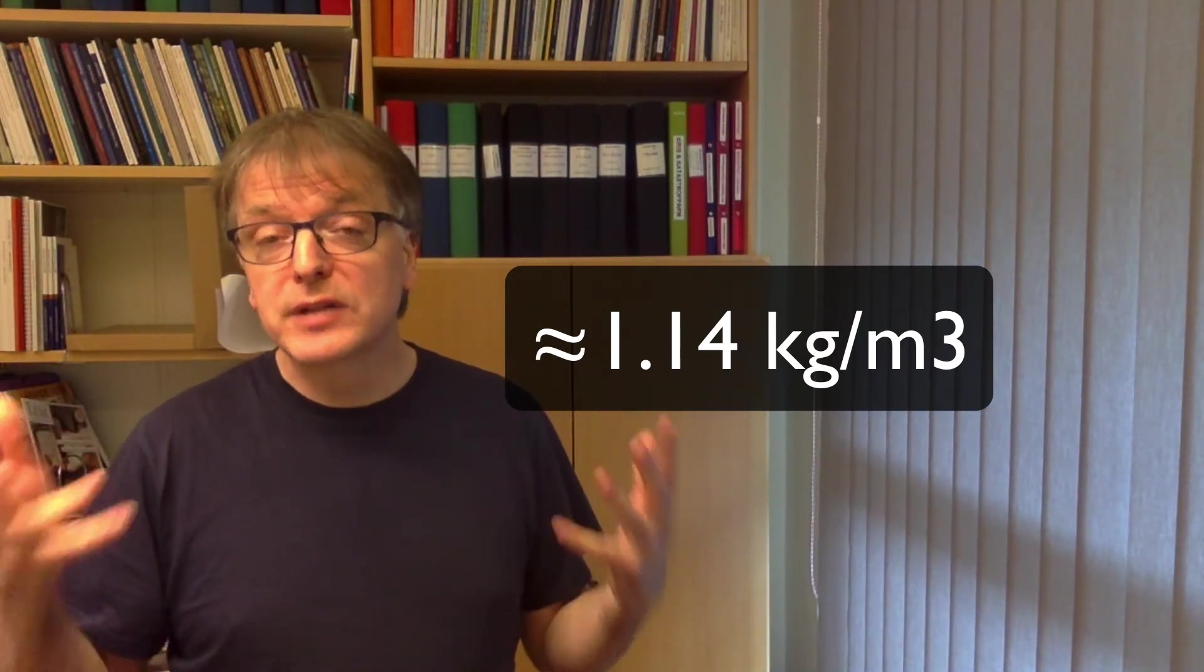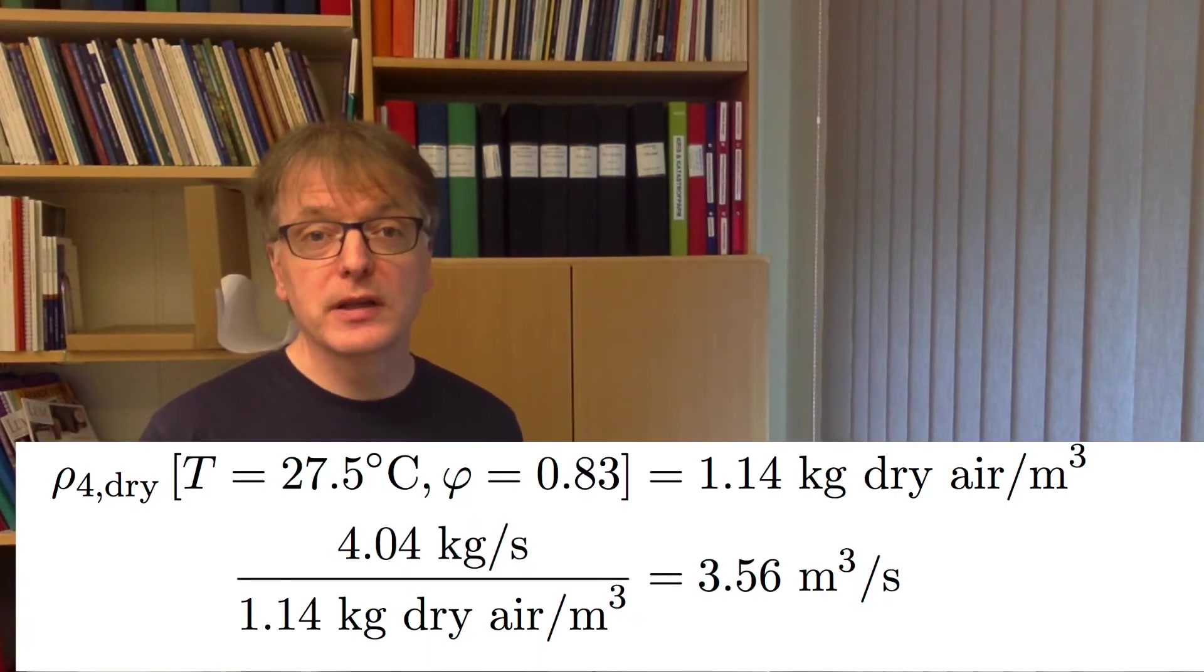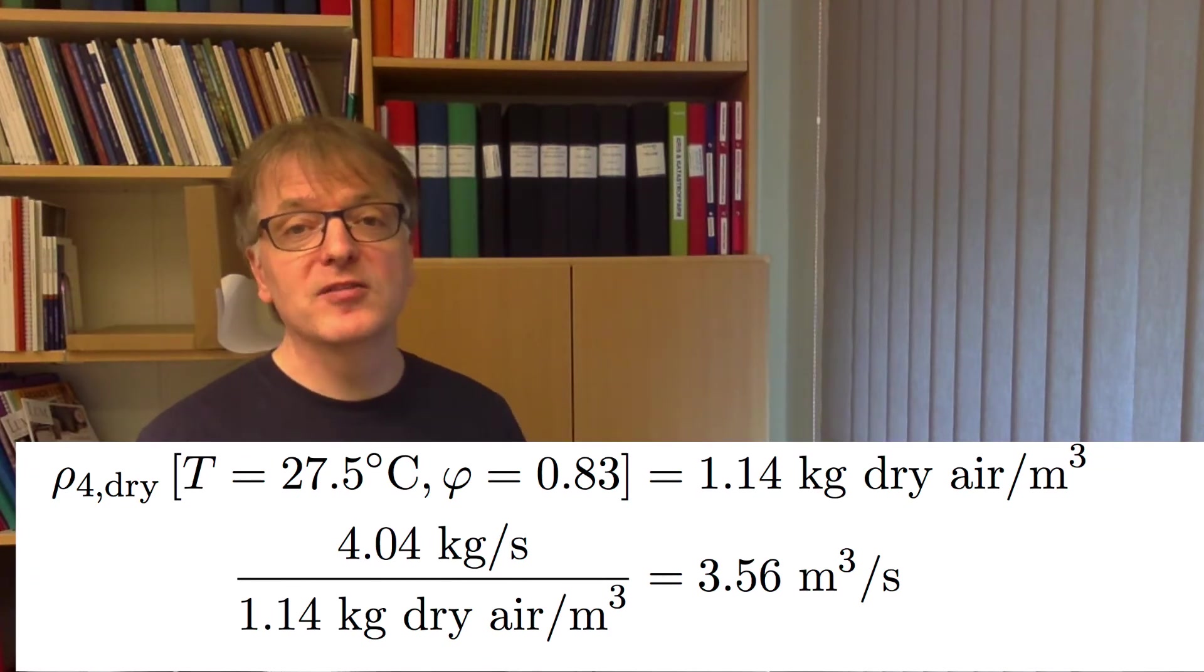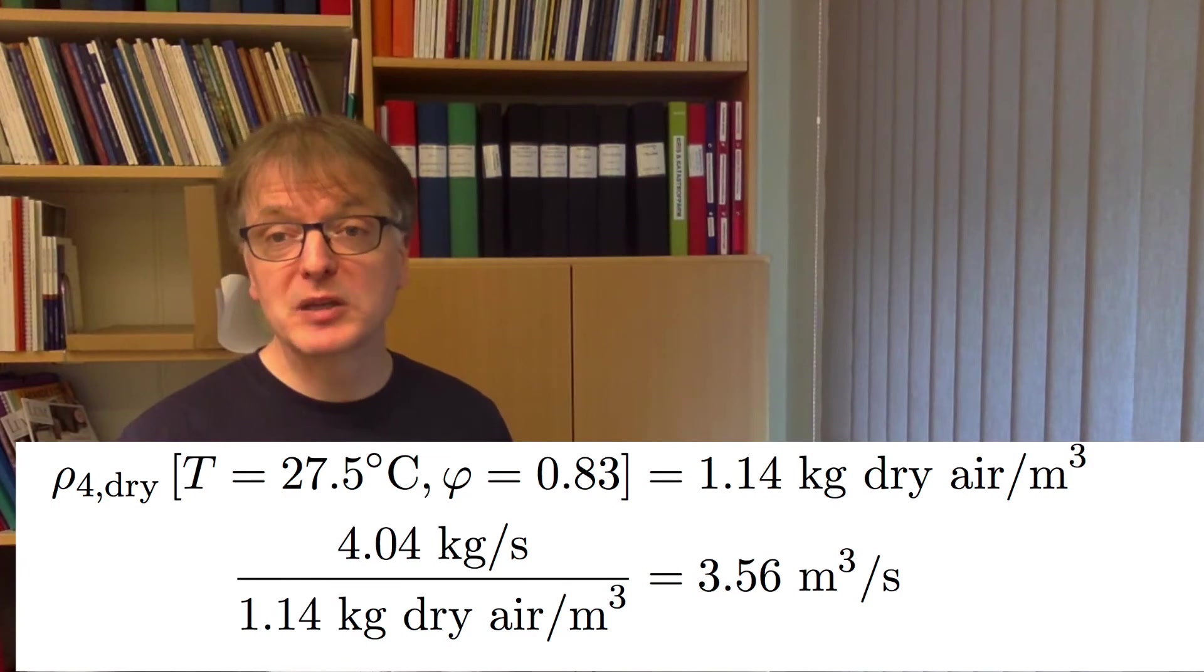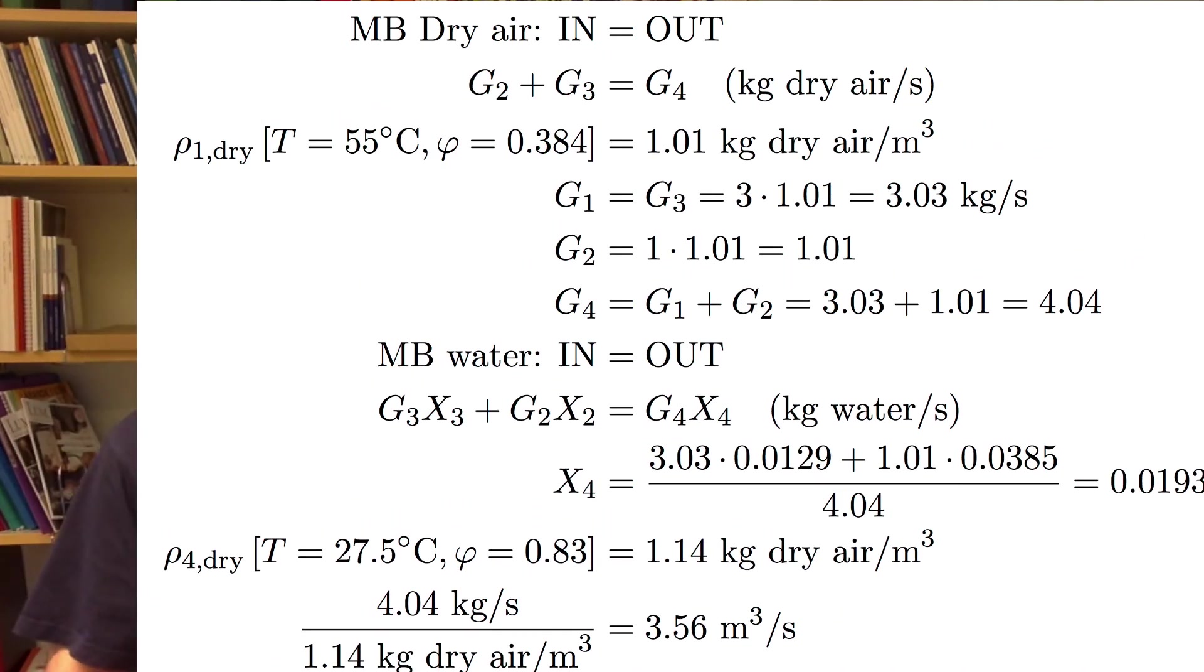Now, when we do things graphically, it won't be super exact, but it will be reasonably fast. So to convert the 4.04 kilograms per second to cubic meters per second, we divide it with the density, and we get 3.54 cubic meters per second. So a lot less than 4 cubic meters per second.